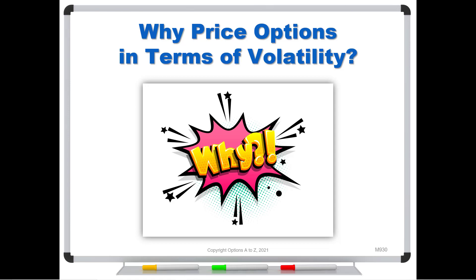Good morning, options traders. A question that I get a lot is: why should we price options in terms of volatility? If you've watched my videos or seen some of the chat messages on the Facebook page, you know I'm always talking about pricing options in terms of volatility. And traders still say, well, why can't we just look at them in terms of dollars? That's how we do it for everything in the world. If a loaf of bread costs a dollar this week and it's a dollar ten next week, we can say the price went up or went down. Why can't we do that with options?